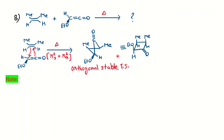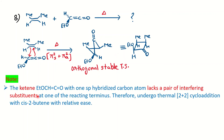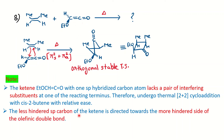In this very important exception, ketene has one sp carbon with no interfering substituent, so it can undergo 2+2 cycloaddition with cis-2-butene under thermal conditions. It organizes so that the less hindered sp carbon is toward the more hindered side of the double bond. This is how you can solve all 2+2 cycloaddition reaction problems under pericyclic reactions. All the best — happy learning!